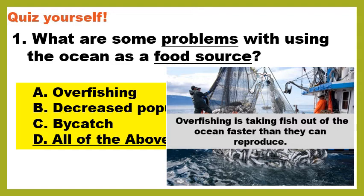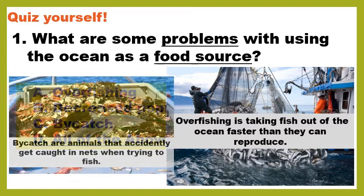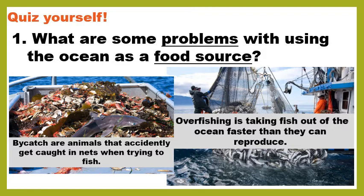A consequence of overfishing is that you can decrease fish populations. Bycatch are animals that are accidentally caught in nets when trying to fish. Here's a picture of bycatch from shrimp fishing — you can see that those animals are not the target fish; those are sharks and other fish that the fishermen didn't mean to catch. Unfortunately, when those animals are brought to the surface they usually die, which can also decrease populations of other ocean animals.